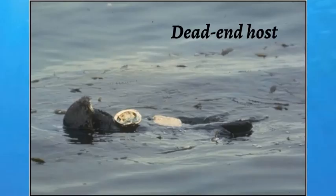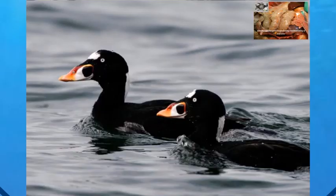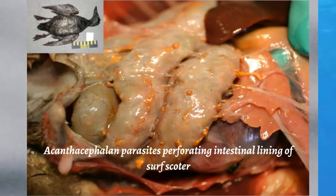The parasites affect California sea otters as well, but sea otters are called a dead-end host because the parasites are not able to reproduce or continue their life cycle. In both definitive and dead-end hosts, parasites that reside in the intestine migrate through the intestinal wall, allowing bacteria to infect the abdominal cavity. This causes deaths among many coastal birds and sea otters.